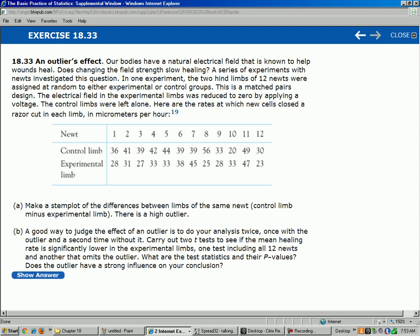Wow, look at newt number eight. Control limb 56 versus 25, that's much, much faster there. 33, 20, that's pretty close. 28, 23, experimental faster. These are about the same control limbs. So it looks to me, actually, the control limb is healing faster than the experimental limb does in general. That's just a preliminary judgment here. So part A.